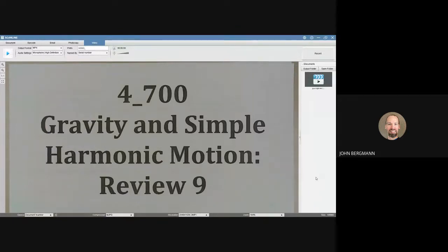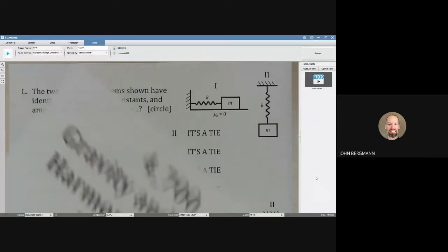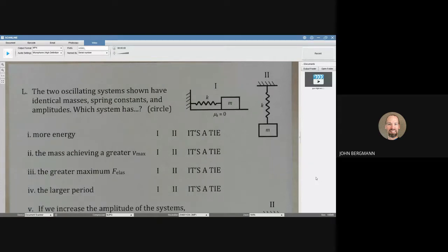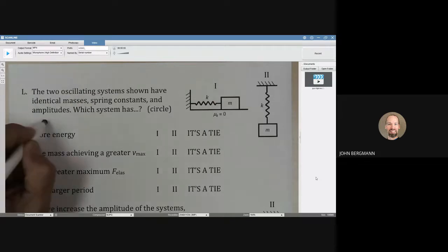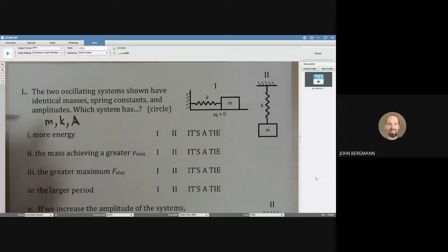Gravity and simple harmonic motion, review 9. The two oscillating systems shown have identical masses, spring constants, and amplitudes. M is the same, K is the same, and the amplitude is the same.